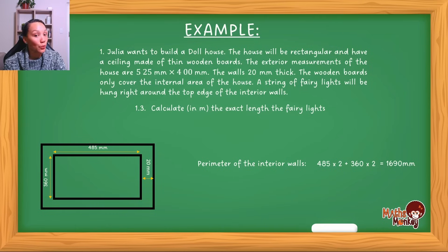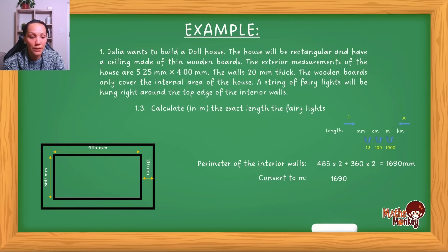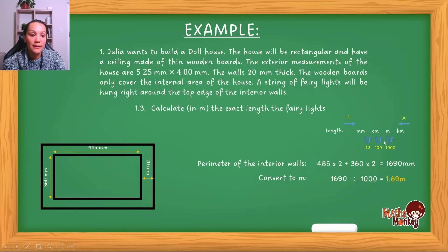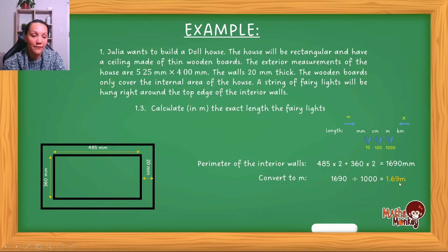The question asks for the answer in meters. Converting from millimeters to meters — there are three zeros in between and I'm moving in the divide direction, so I divide by 1,000. My answer is therefore 1.69 meters.